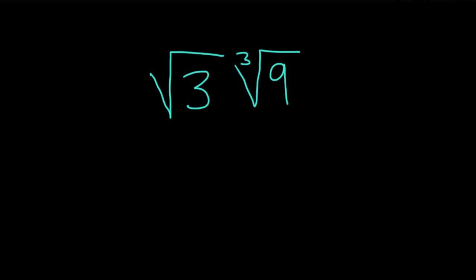Hi, in this problem we're going to multiply. We have the square root of three times the cube root of nine. So we want a single radical here.